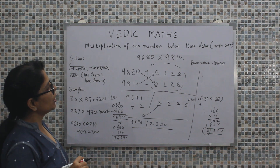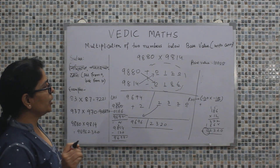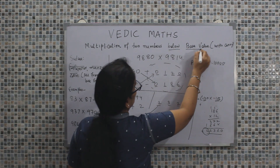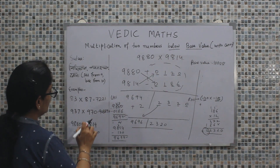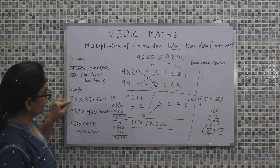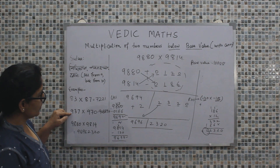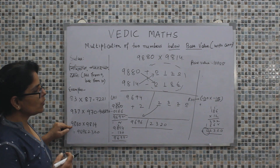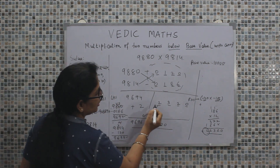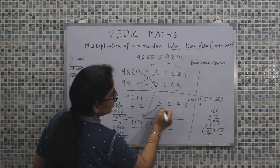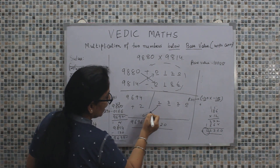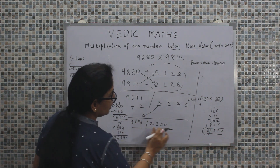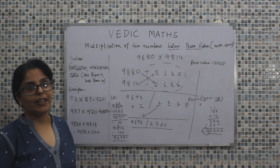In this particular discussion, we did the multiplication of two numbers below the base value. The base value was 100 for the first example, 1000 for the second, and 10,000 for the third. 'Below' means the numbers are less than the base value, and with carry means that whatever excess value we get from the RHS, that excess value is taken to the LHS and added to get the final answer. Thanks a lot.